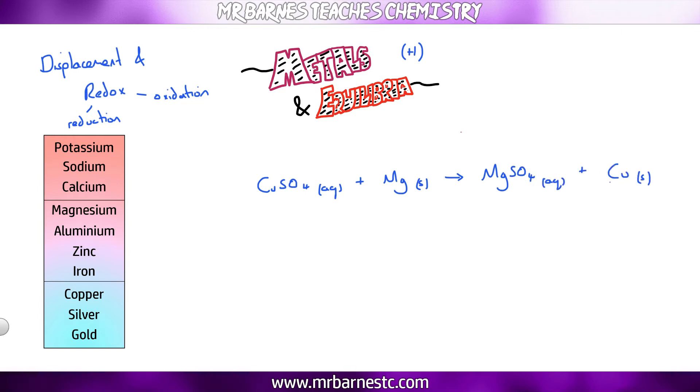You can see here I've got my state symbols of aqueous for my solutions, my sulfates and solid for my metals. What you need to be able to do is tell me where oxidation and reduction are occurring in these reactions. Remembering OIL RIG: oxidation is loss, reduction is gain. So there are a few steps you can follow. The first one, separate out the ions and remove the spectator ions.